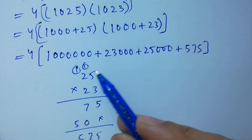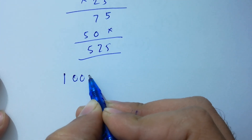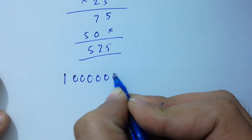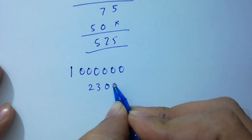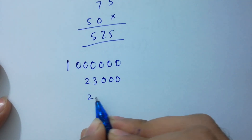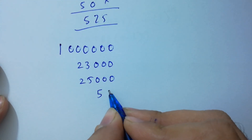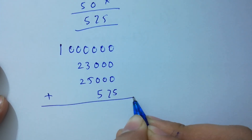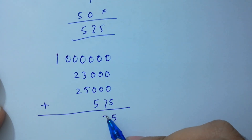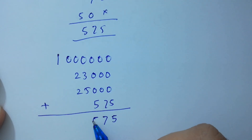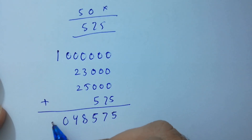In the next step, we add all components: 1,000,000 plus 23,000 plus 25,000 plus 575. Adding column by column: 5, 7, 5, then 3 plus 5 is 8, then 2 plus 2 is 4, then 0, then 1. So the result is 1,048,575.